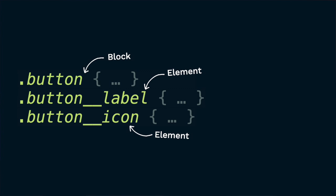To summarize so far: a block is a reusable part of the layout that works on its own with either semantic or functional meaning. An element is a part of the block that doesn't work on its own.